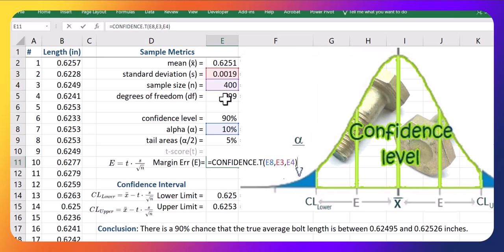Funny enough, don't know why Excel programmed it this way, but in confidence.t, we put in the actual sample size, which is the 400 in this case.